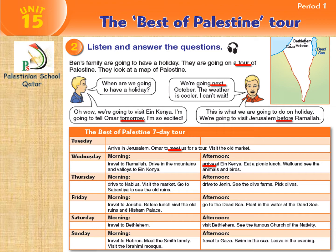Wednesday morning: travel to Ramallah, drive in the mountains and valleys. Visit the market, go to Sabastia to see the old ruins. Afternoon: drive to Nablus, visit the market, go to Sabastia to see the old ruins. Drive to Jenin, see the olive farms, pick olives. Friday morning: travel to Jericho, before lunch visit the old ruins and Hisham Palace.